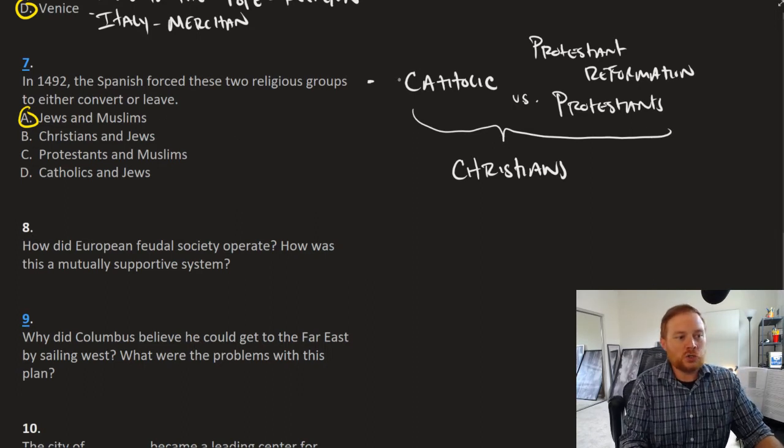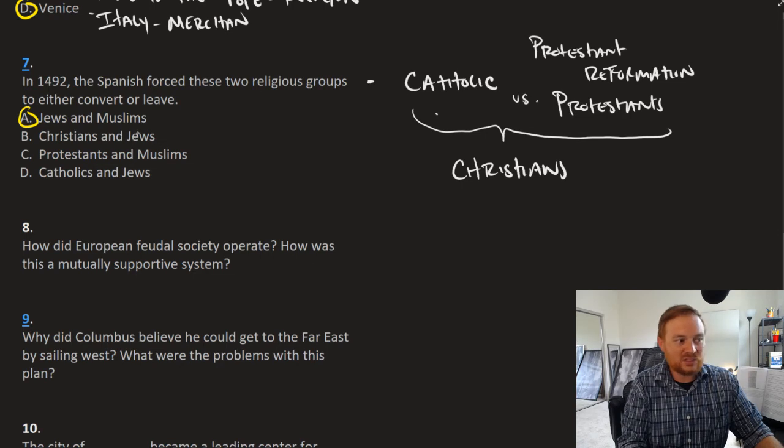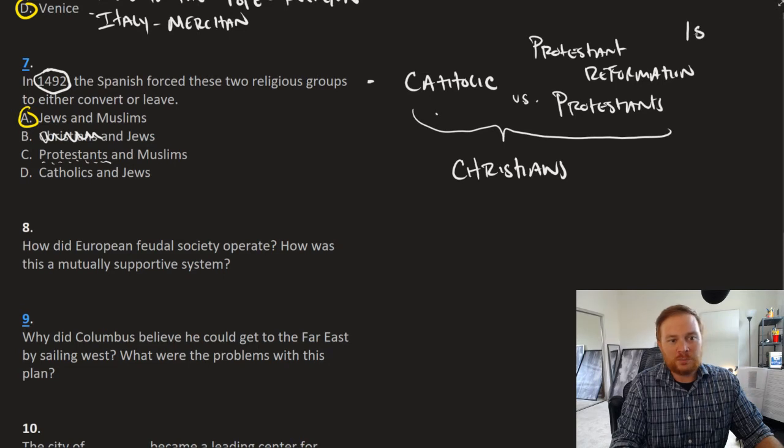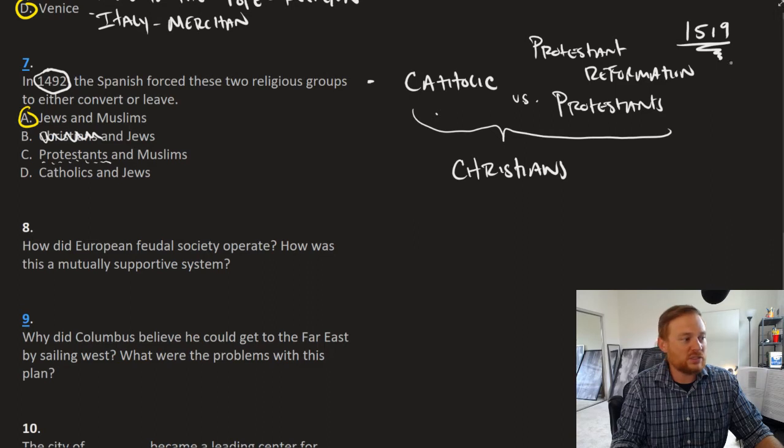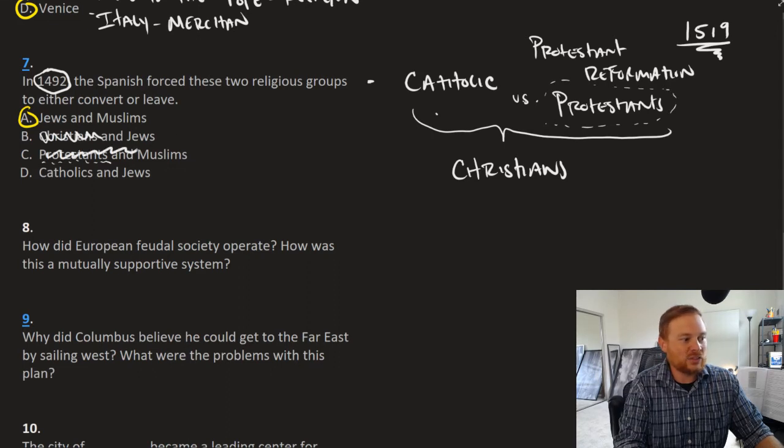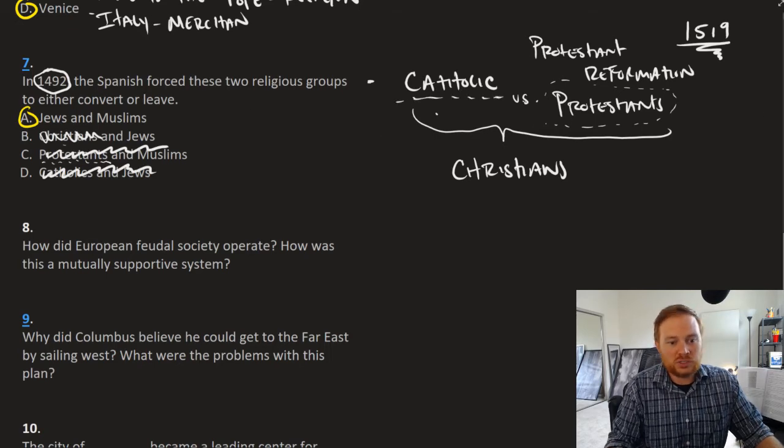Christians and Jews, nope, because Catholics are Christians, so it wouldn't make sense for them to force Christians out. It could be Protestants, but the key thing here being this date, 1492, the Protestant Reformation happened, I don't know, we'll say 1519, something like that, 1517. So the formation of Protestants has not happened yet. Therefore, it's not this answer. And of course, the answer is not D, because the Spanish are primarily Catholic. The answer is A, Jews and Muslims.